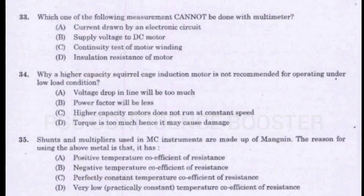Question number 33. Which one of the following measurements cannot be done with a multimeter? Option A - Current drawn by an electronic circuit. Option B - Supply voltage to DC motor. Option C - Continuity test of motor winding. Option D - Insulation resistance of motor. Answer is Option D: Insulation resistance of motor.